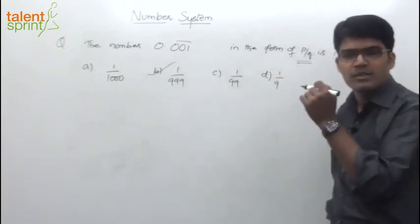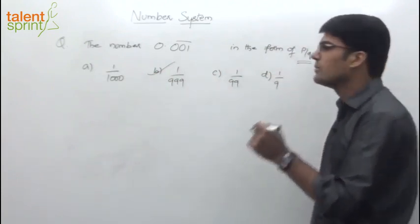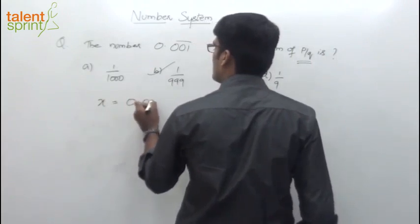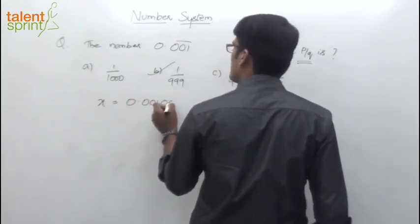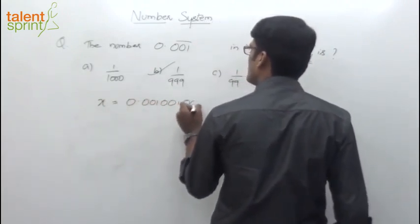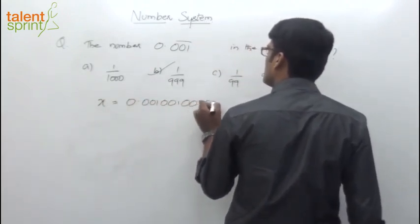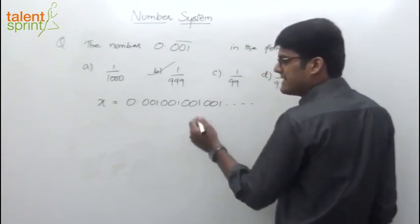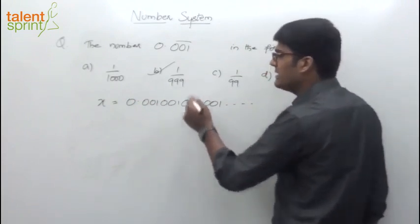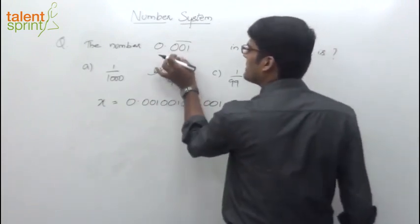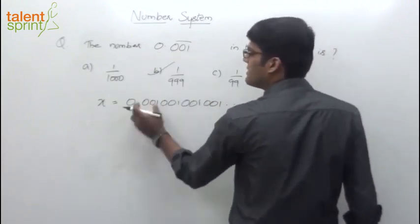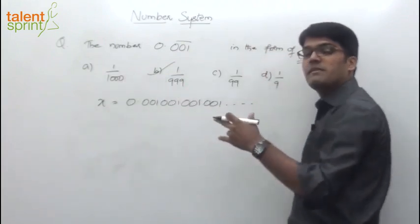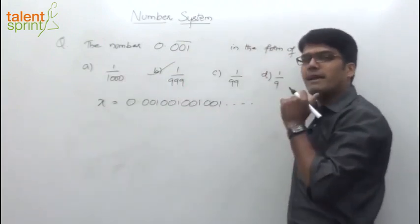The second regular method: let the number be X. This is 0.001001001001 and so on. Since 3 digits are repeating at regular intervals, and the bar is over 3 digits, we multiply by 1000. In the previous case we multiplied by 100.